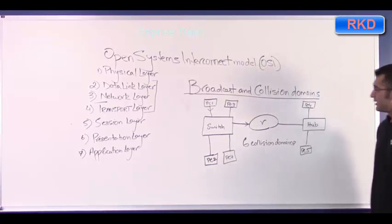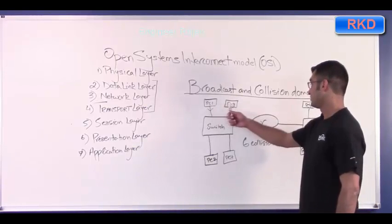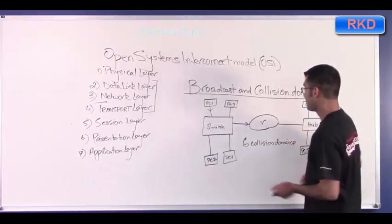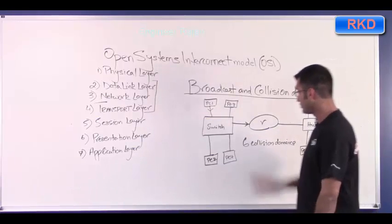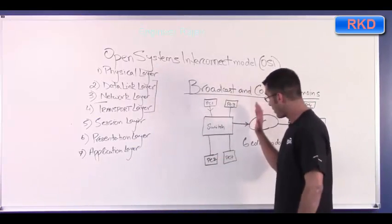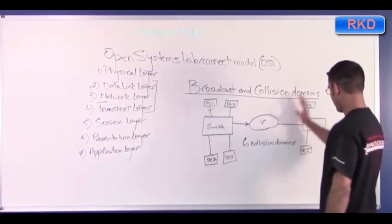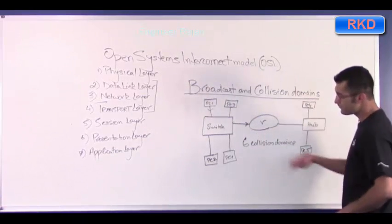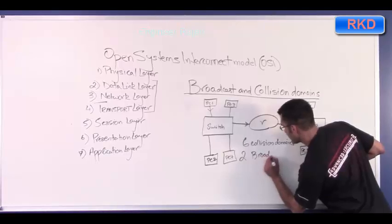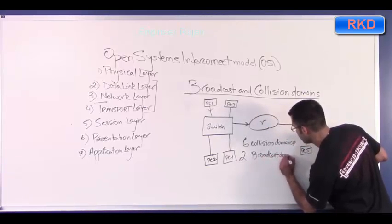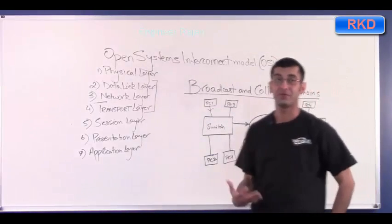For broadcast domains: if PC2 sends a broadcast, PC1, PC3, and PC4 receive it, and the router receives it but will not allow it to traverse. So you have one broadcast domain on the switch side of the router and one broadcast domain on the hub side of the router — giving you two broadcast domains total in this topology. By default — and I keep saying by default for a reason.